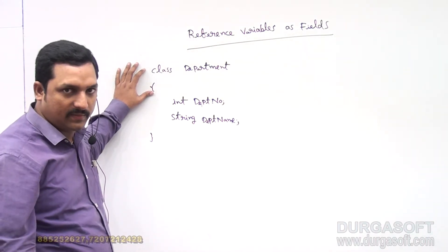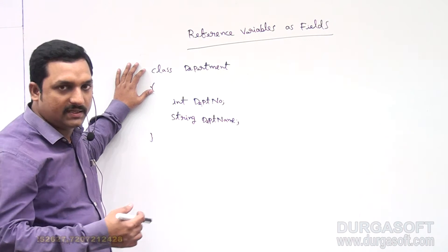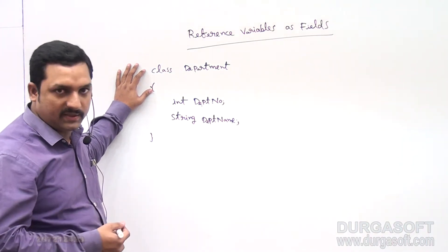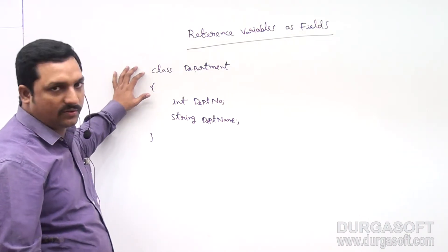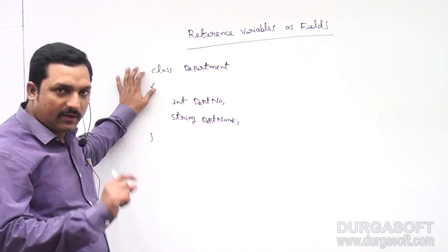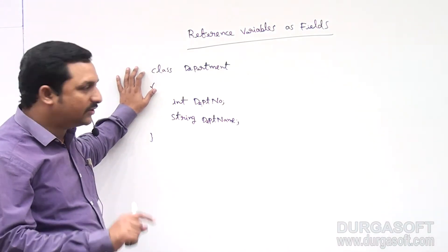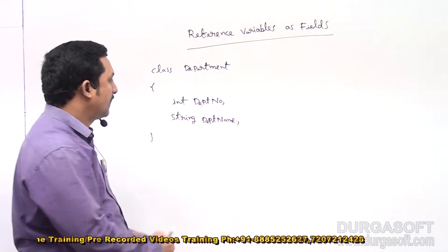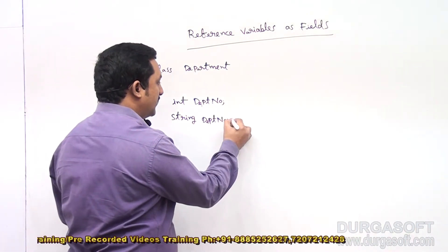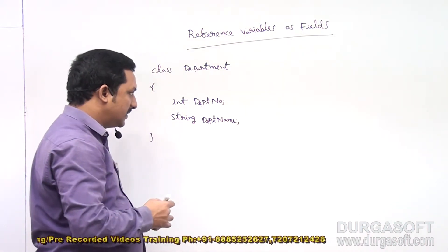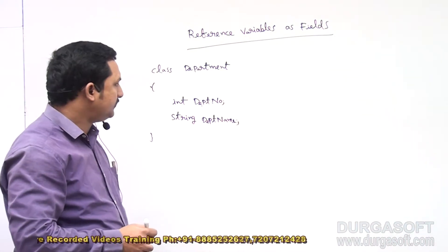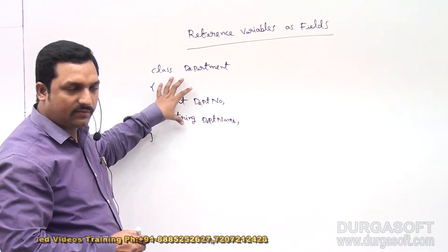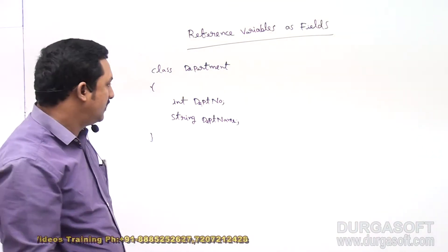In organizations, different departments are available — Accounting Department, Sales Department, Marketing Department, and others. I want to store department details. Every department should contain one department number and a name. This is the structure or data related to one particular department.